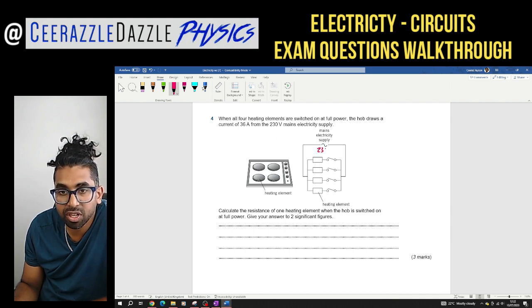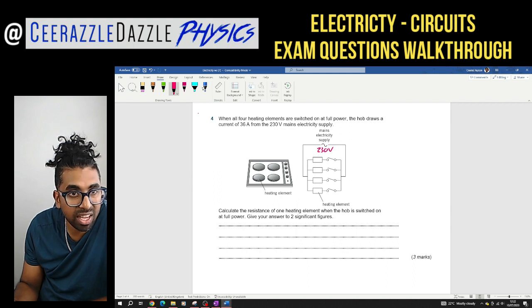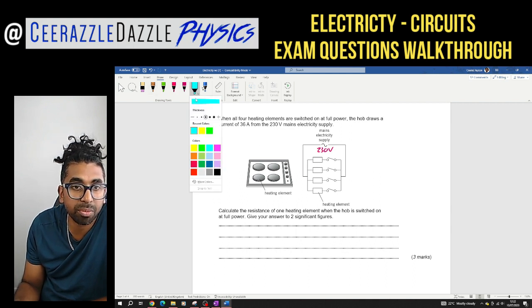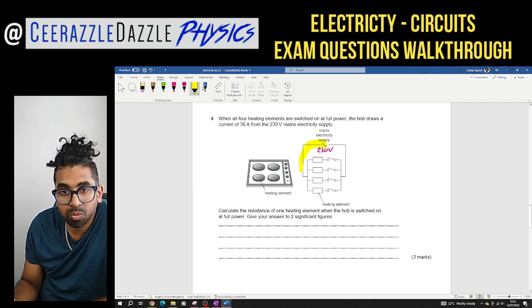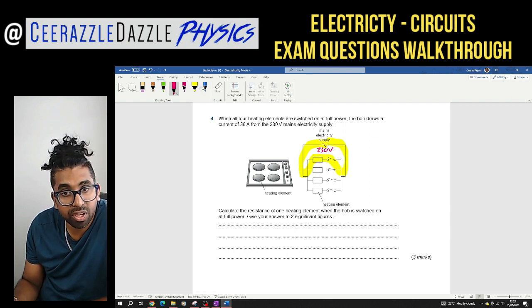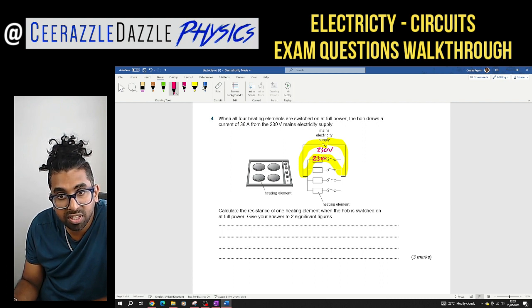So over here, I've got 230 volts going in from the main supply. And therefore, don't forget loop by loop, the voltage must remain the same. So this is one loop over here, going all the way back around again. So if it's 230 volts, I must be dropping off 230 volts across there and then going back again. So all of them are 230 volts, 230 volts, 230 volts over here.